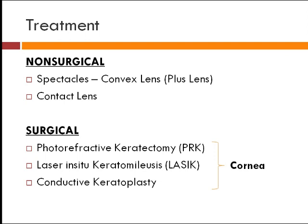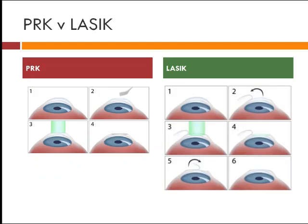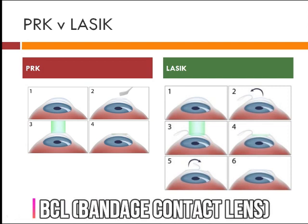Treatment involves surgical and non-surgical options. Non-surgical includes spectacles corrected with a convex lens, and contact lenses. Surgical options include photorefractive keratectomy (PRK), laser in situ keratomileusis (LASIK), and conductive keratoplasty — these are done on the cornea. The laser used in both PRK and LASIK is the excimer laser, but the mode of application differs. In PRK, the corneal epithelium is removed, the excimer laser is applied to flatten the corneal surface, a protective contact lens is applied, and we wait for healing.